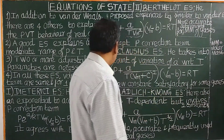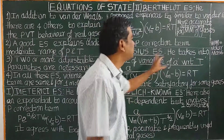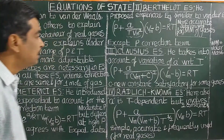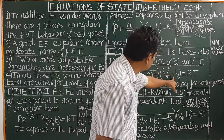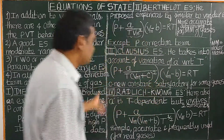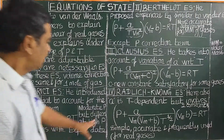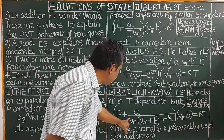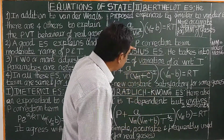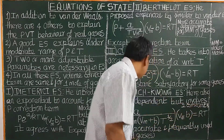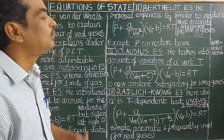The fourth equation of state was proposed by Redlich-Kwong. Here also, A is considered temperature dependent. Unlike the Clausius equation which has three constants A, B, and C, the Redlich-Kwong equation involves only two constants, A and B. The equation is: P + A/(T^(1/2)·Vm·(Vm + b)) · (Vm − b) = RT. This equation is the simplest, more accurate, and frequently used for real gases.